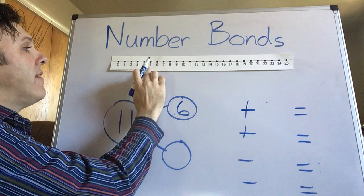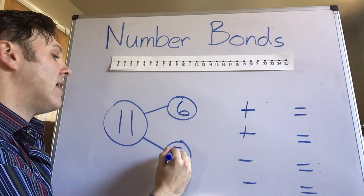One, two, three, four, five, six. And I'm at number five. So I know that six and five make eleven.